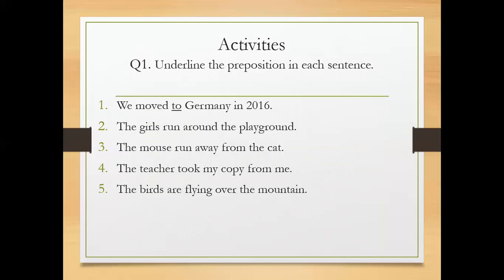First one I have done for you: we moved to Germany in 2016. Here 'to' is the preposition. The girls run around the playground. The mouse run away from the cat. The teacher took my copy from me. The birds are flying over the mountains. Students, you have to do it by yourself.